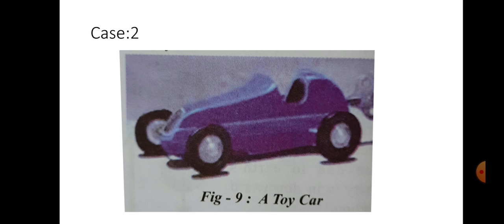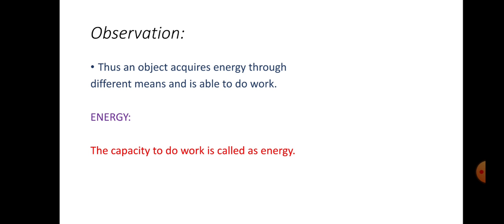In that way, any object acquires energy through different means and is able to do work. The capacity of doing work by an object on another object depends on position and state of the object which is doing work. Finally, we can define the energy as the capacity to do work. The capacity to do work is called as energy.